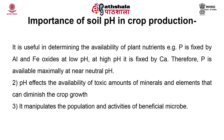Next is the importance of soil pH in crop production. First, it is useful in determining the availability of plant nutrients. For example, phosphorus is fixed by aluminium and iron oxides at low pH, and at high pH it is fixed by calcium. Therefore, phosphorus is available maximally at near neutral pH. pH affects the availability of toxic amounts of minerals and elements that can diminish crop growth. It also manipulates the population and activities of beneficial microbes.